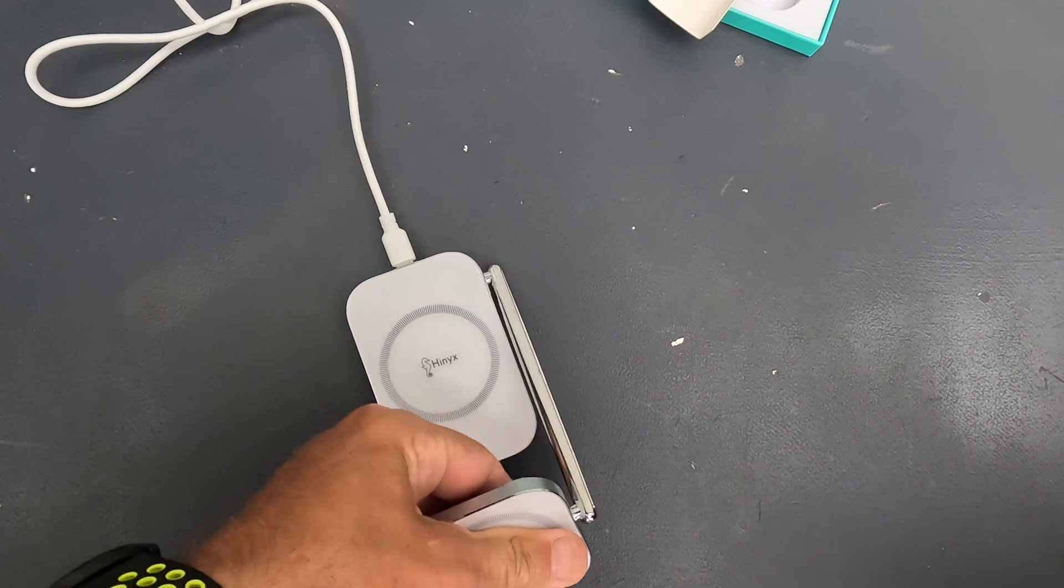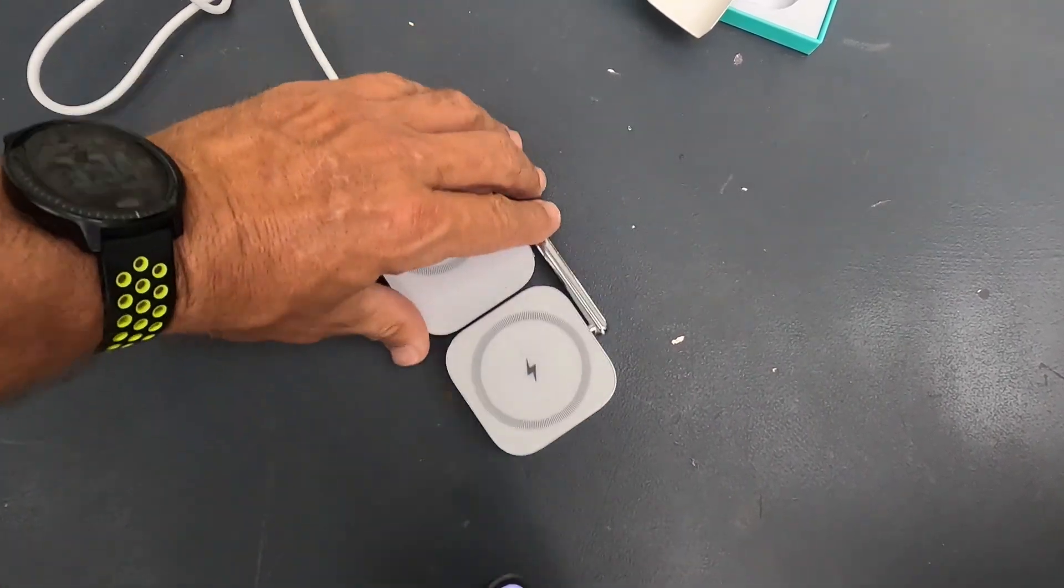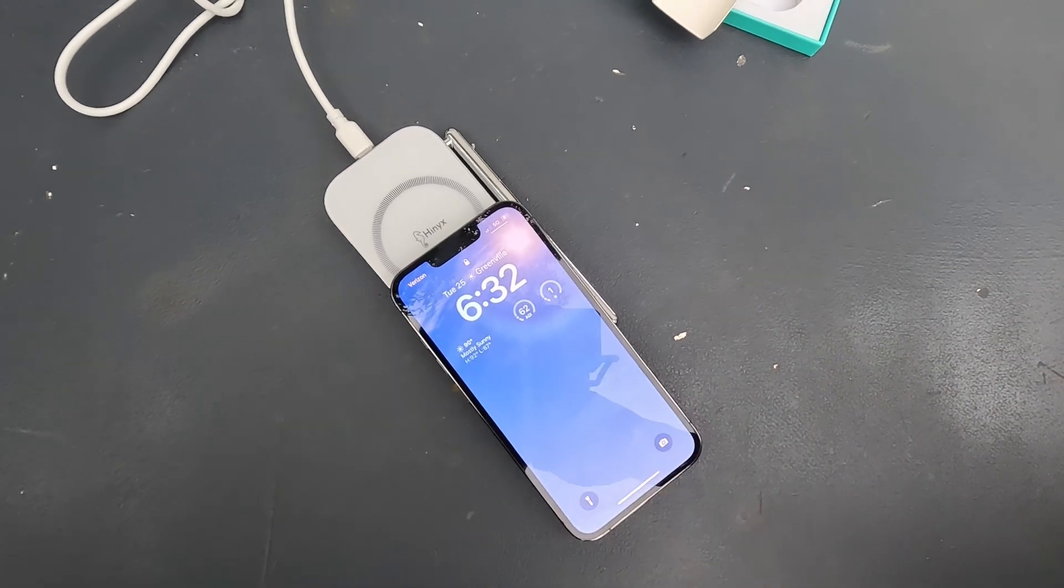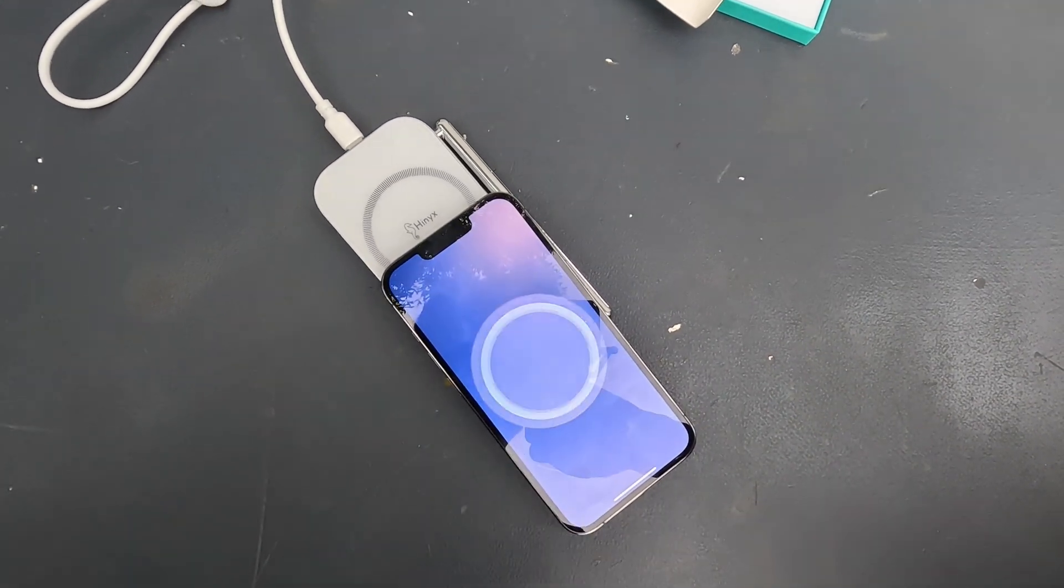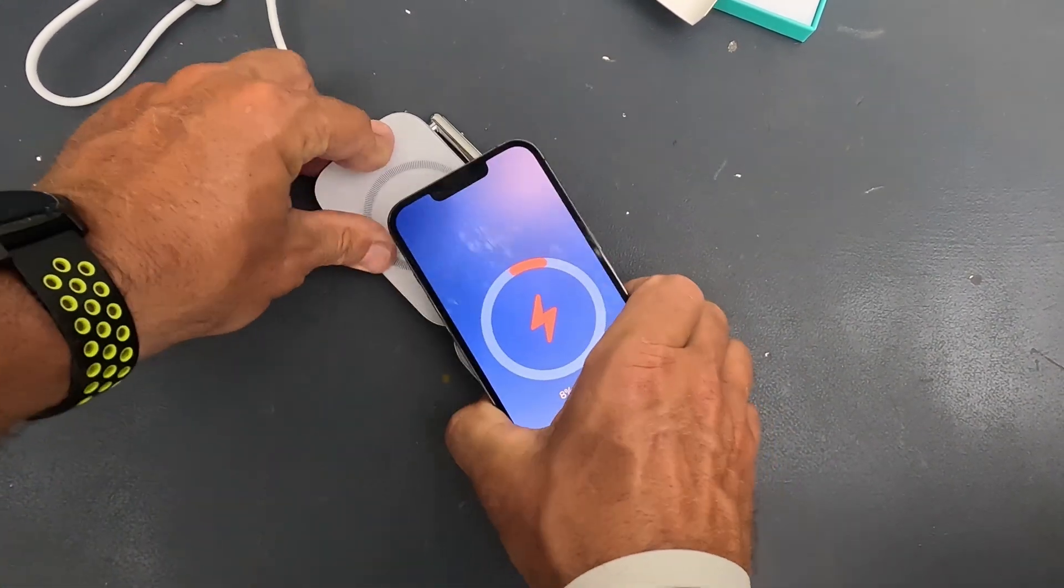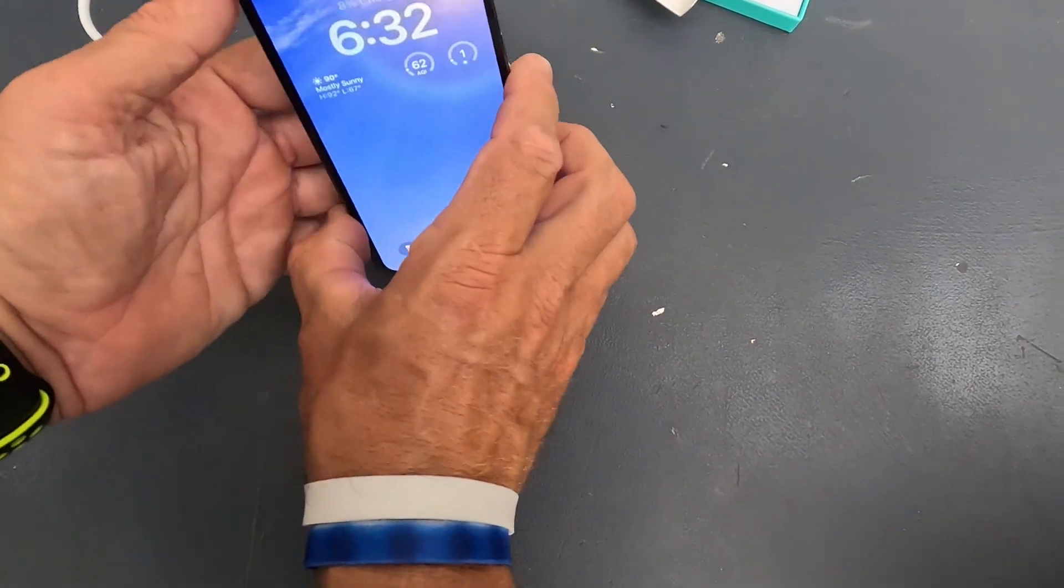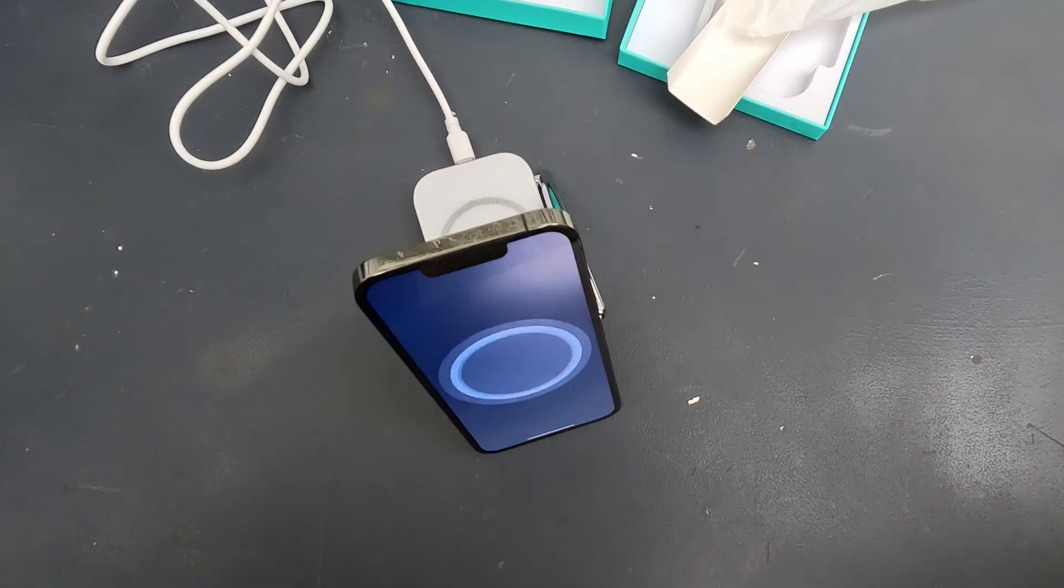But what's cool is if you want, you can run this thing down flat. So you ain't even gotta, you can just kind of like toss it on there. Because that is MagSafe, and as soon as you put it on there, it's locked in. So if you want to use this as like your nightstand or like watching a movie or something, how cool is this? Look at that.